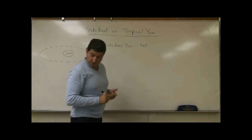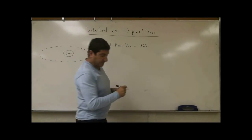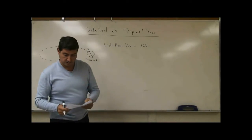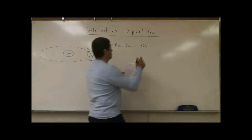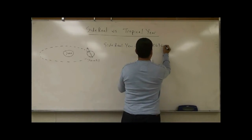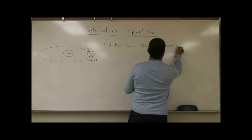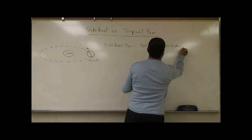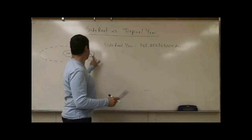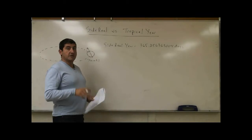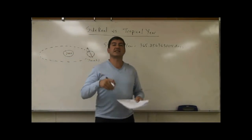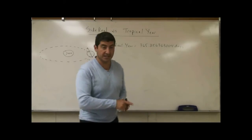The sidereal year is equal to 365.256363004 days. That's how many days it takes for the Earth to go around and come back to the same point. Now, while the Earth is doing that, the Earth is at the same time precessing.